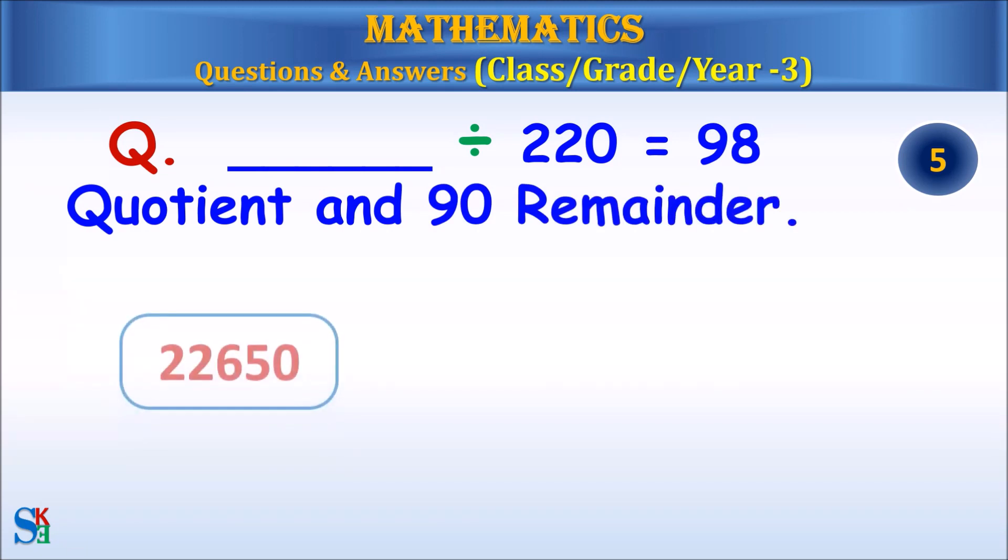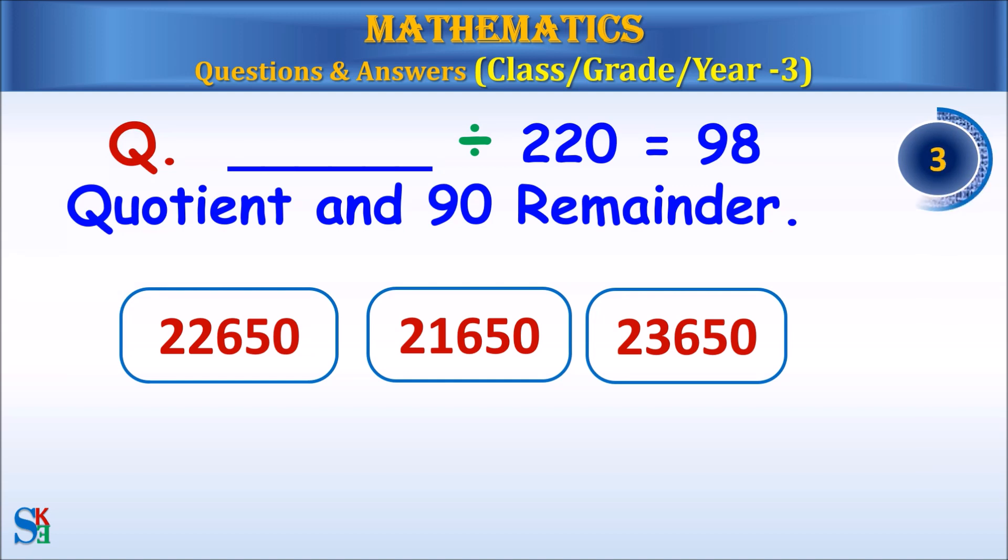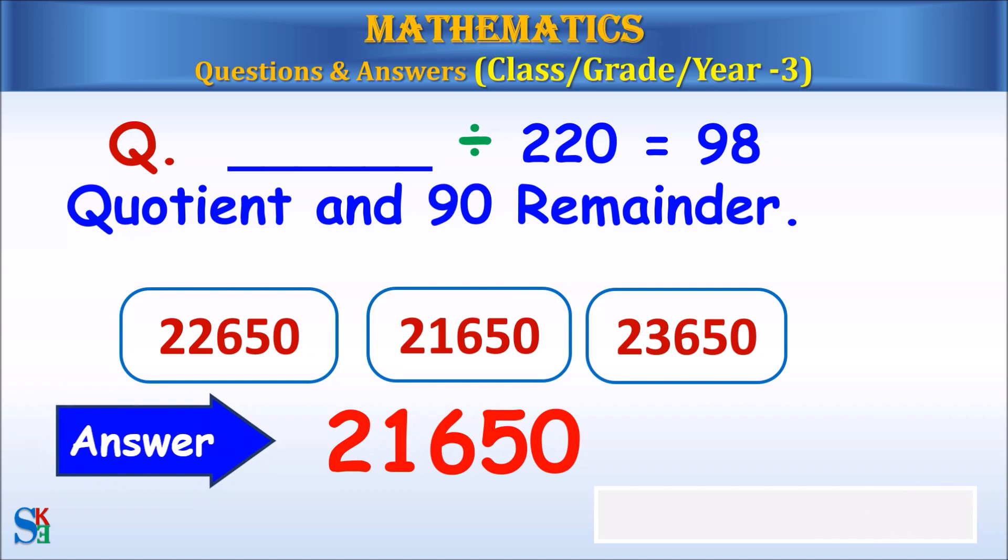What divided by 220 equals 98 quotient and 90 remainder? Answer: 21,650.